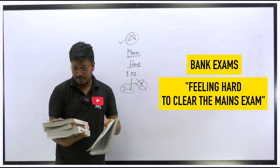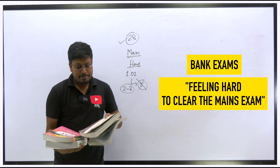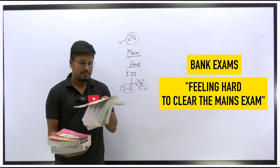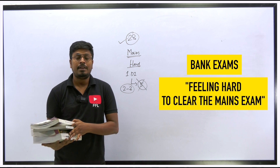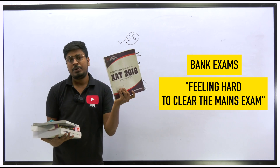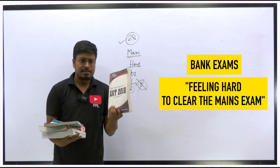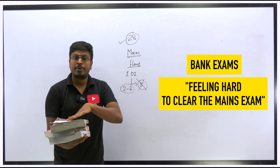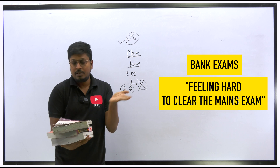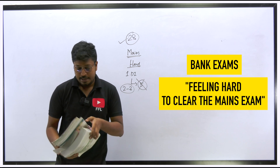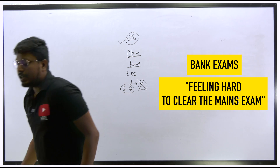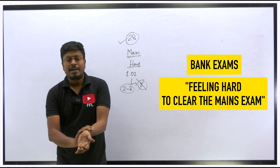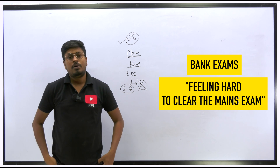The third and fourth books are for SNAP and XAT — Xavier Aptitude Test. I'm not sure if these exams are still qualifying for certain purposes, but I use these books for referring to quantitative aptitude questions. XAT also has quantitative aptitude, reasoning, and English, but the quantitative aptitude is a little difficult. Referring to these previous year question papers gives you a good idea of tough-level questions.